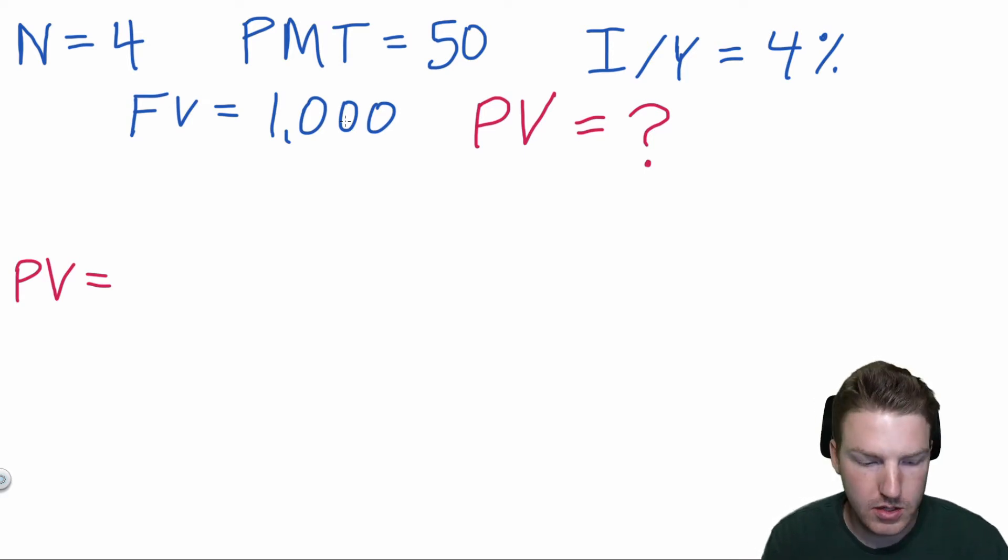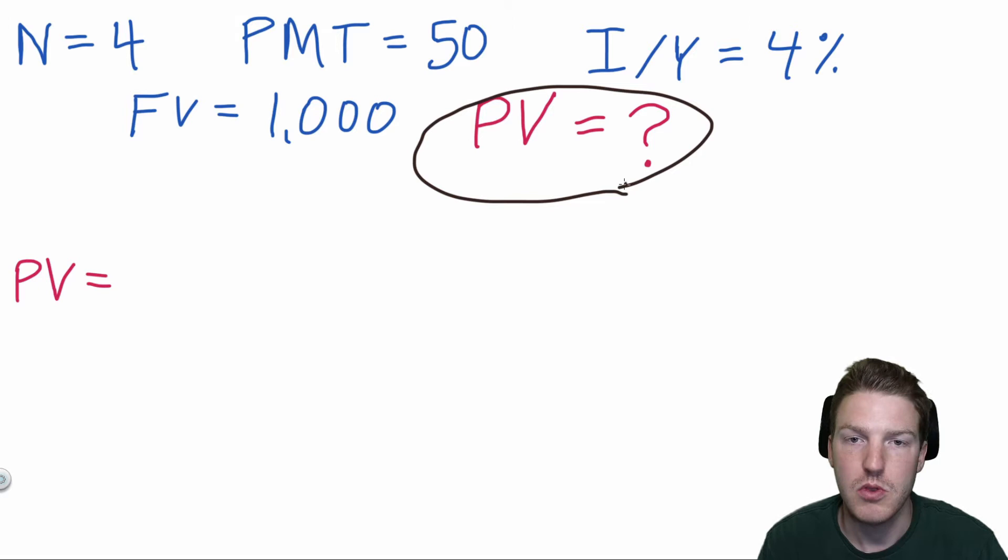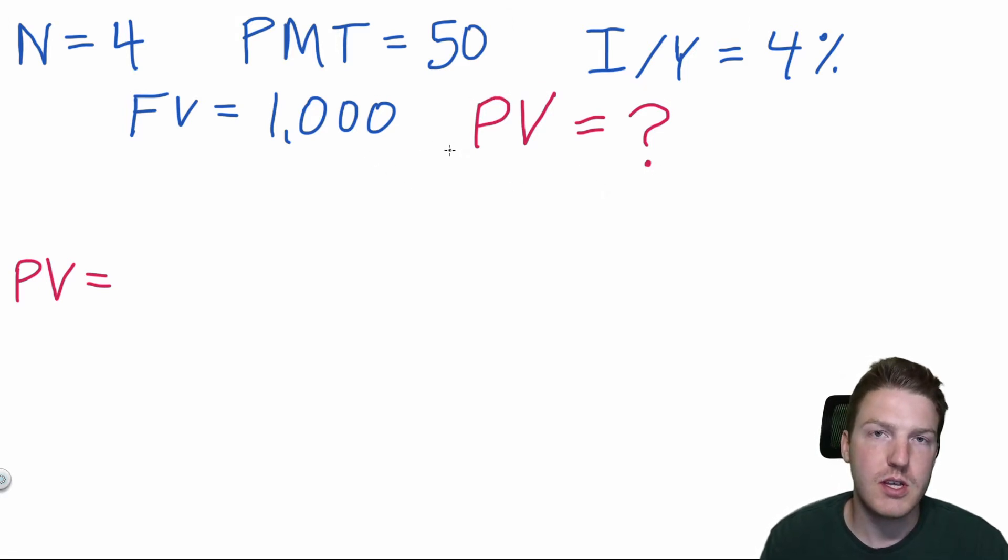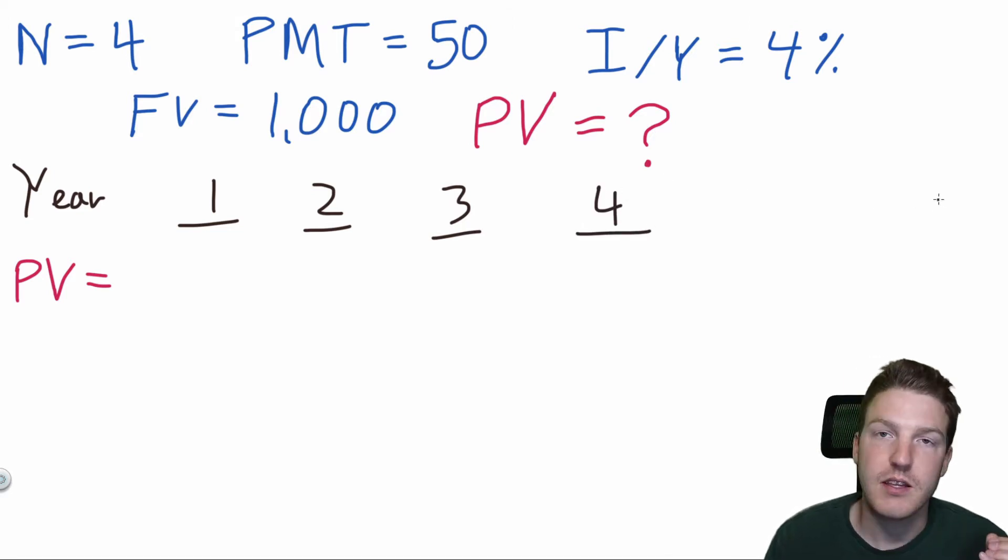Now if you have a financial calculator you can punch all four of these inputs in and then hit compute PV and it will give you the answer and the price of the bond. But what I'm going to do here is actually walk you through how this calculation works. So we can think about it in terms of years. I'm going to map this out. So year one right here, two, three, and four. So we're just going to have to take the cash flows of each year and divide it by the interest rate annualized to that period of time.